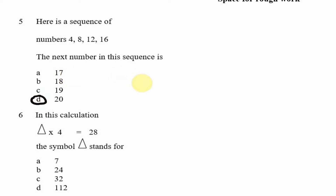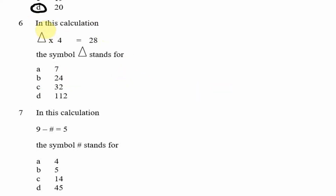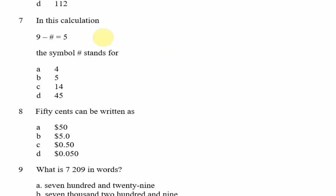Question 6: In this calculation, triangle × 4 = 28. What number does the triangle stand for? In other words, what can you multiply by 4 to get 28? Using our times tables: 7 × 4 = 28. So the triangle stands for 7.